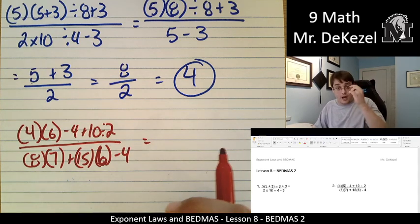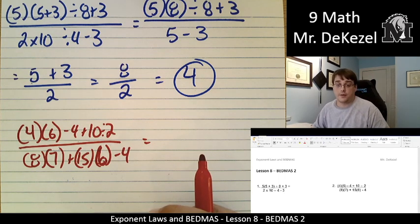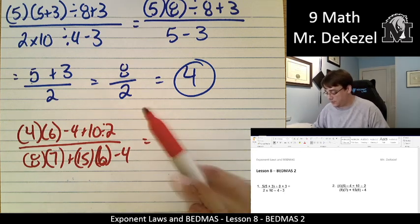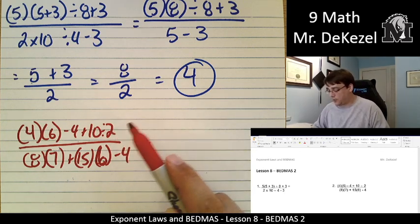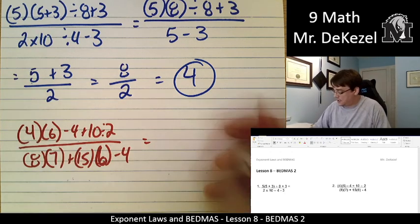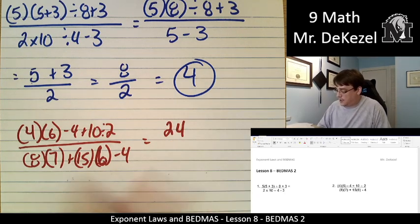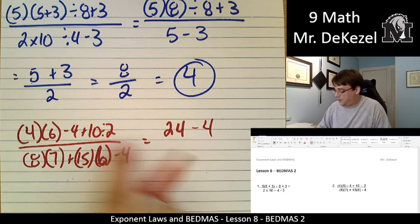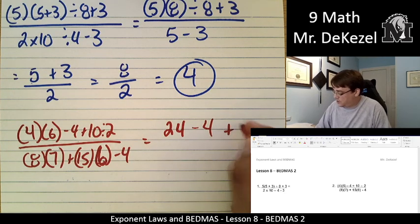Okay. Again, we treat the top and the bottom completely separately, and that's our first thing we need to do. So I see no brackets in the top. I just see things multiplied and divided by each other. So I can do them each because they're separate. So 4 times 6 is 24, and minus 4 stays as it is. And then we have 10 divided by 2, which is 5.